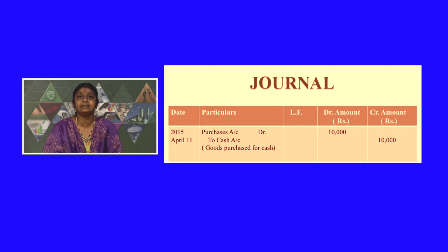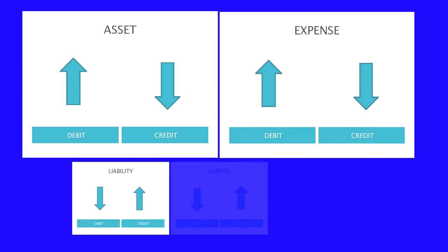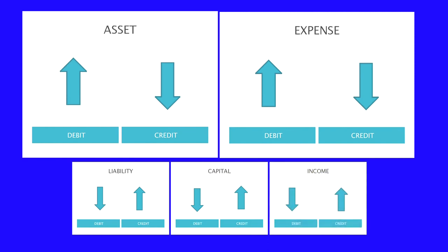Business transactions are classified as assets, liabilities, expense, revenue, and capital. On this basis we classify each transaction. Purchases account will be considered as an expense, and cash account will be considered as an asset. Then the next procedure is to apply the rules of debit and credit. Rules of debit and credit are applied to the affected accounts. Asset accounts and expense accounts will be debited if there is an increase, and credited if there is a decrease.